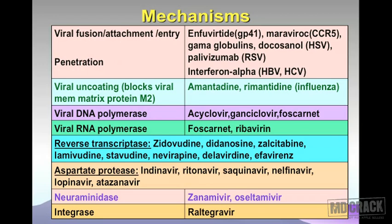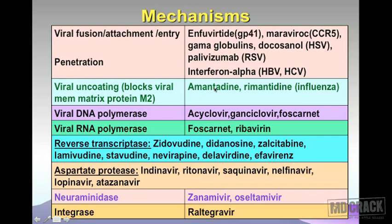After viral entry there is viral uncoating. To block viral uncoating, one mechanism is to block the viral membrane matrix protein called M2. If you block M2, you can inhibit viral uncoating. The drugs that do this are amantadine and rimantadine, used in the management of influenza. Note that amantadine is also an anti-Parkinson agent.